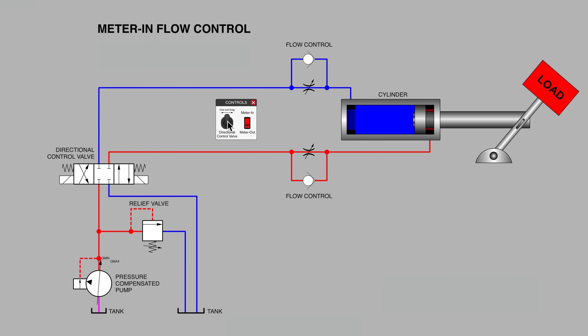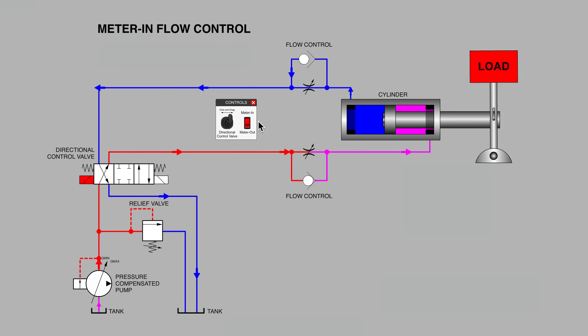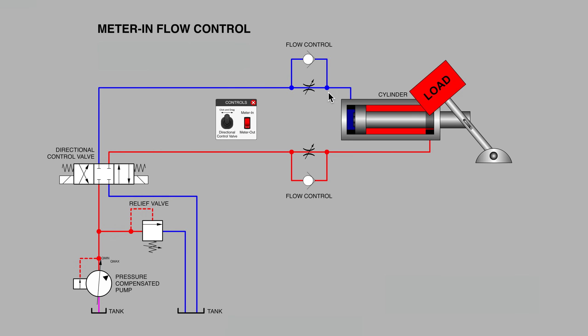Now let's watch meter in flow controlling taking place on the line that feeds the rod end port. This will be meter in for the retracting of the cylinder. You could see that fluid is being metered on the bottom line and oil leaving the blind end port can do so freely through the return flow check valve mounted in parallel to the needle valve. Let's work forward and back again.